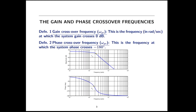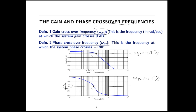Now let's get into the analysis of the Bode plot. First, we're going to pick off the gain and phase crossover frequencies. The gain crossover frequency is the frequency in radians per second where the magnitude plot crosses the 0 dB line — here that's about 2.3 radians per second. The phase crossover frequency, omega pc, is where the phase plot crosses negative 180 degrees — here that's roughly 1.5 radians per second.